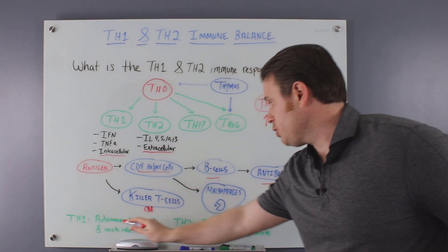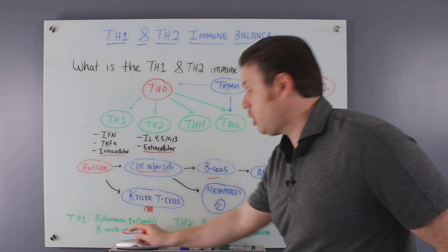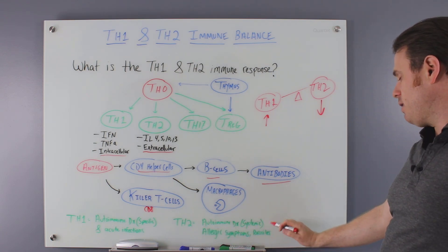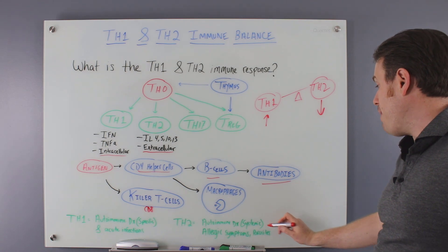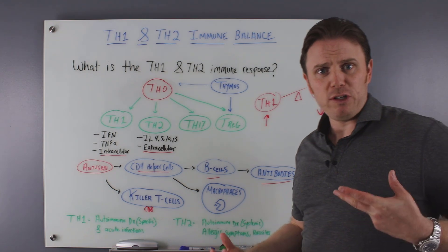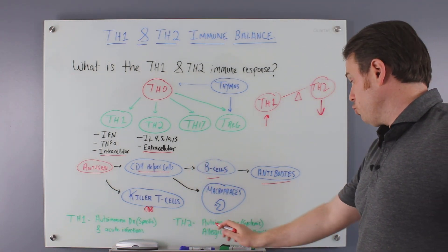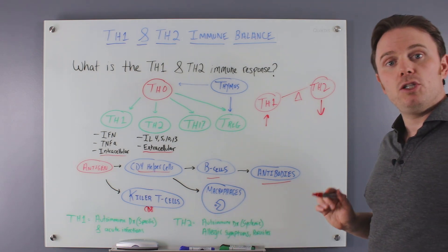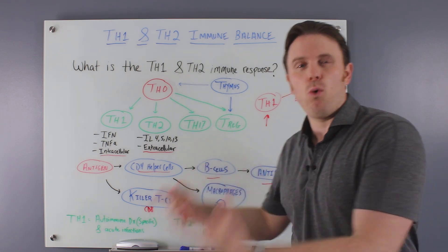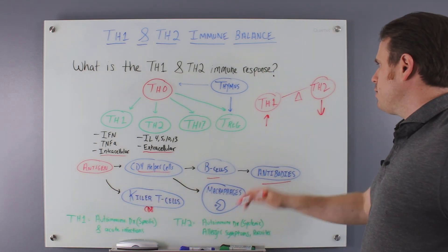Our TH1 is specific to autoimmune conditions and acute infections — autoimmune conditions like Hashimoto's, and acute infections like parasites and viruses. TH2 is more for systemic autoimmune disease — lupus is kind of in this category. Some say parasites can also be TH2 as well, though the research is conflicting. TH2 also covers allergic responses and systemic autoimmune conditions, whereas TH1 is more for organ-specific autoimmunity. Of course, autoimmunity affects everywhere, but TH1 is more organ-specific while TH2 is more systemic to the body.